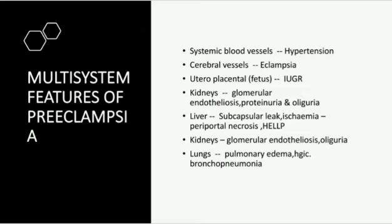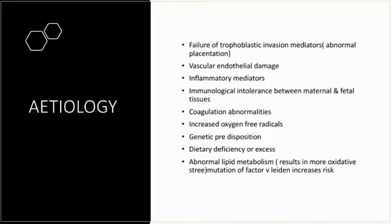In the lungs there is pulmonary edema and hemorrhagic bronchopneumonia. Etiology of preeclampsia includes: abnormal placentation leading to failure of trophoblastic invasion, vascular endothelial damage, inflammatory mediators, immunological intolerance between paternal and fetal tissues, coagulation abnormalities, increased oxygen free radicals, some genetic predisposition, dietary deficiency or excess, and abnormal liver metabolism resulting in more oxidative stress and mutation of factor V. These all increase the risk.